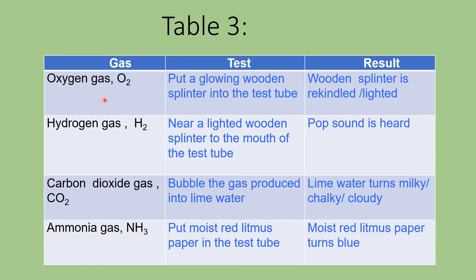We start with the four gases. First, oxygen gas — a common gas. For the test, put a glowing wooden splinter into the test tube. 'Glowing' means it has no flame, just an ember. Place it just near the reactant in the test tube. The result: it is rekindled or relighted. 'Re-' means it was originally alight, went out, and when placed into the test tube it will relight — menyala semula.